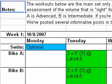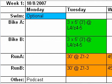Vertically, it has the swim, the bike, and the run. When you get down into it, the bike and the run are both divided into A group and then B group.